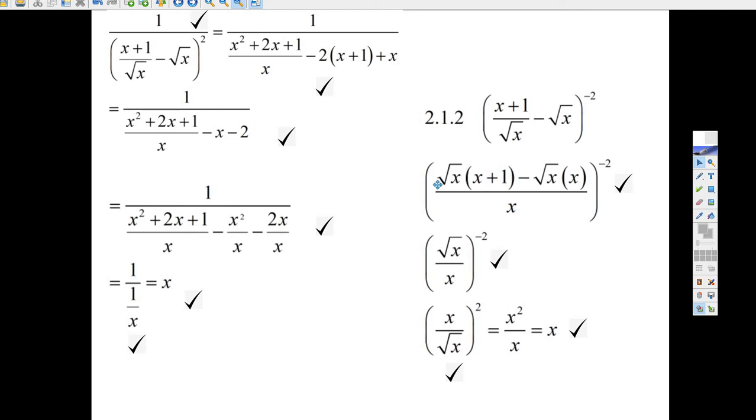You've got, let's see what we have here. We have root x times 1. That gives you root x. And then you have root x times x minus root x times x. That cancels. All you're left with is the root x.